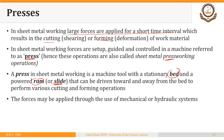The ram performs various cutting and forming operations. The punch is directly or indirectly attached to the ram or slide, and the die is attached to the bed. The bed and the die are stationary while the punch reciprocates with the help of the ram, which is attached to a drive mechanism driven through a motor and a flywheel in the case of a mechanical press.